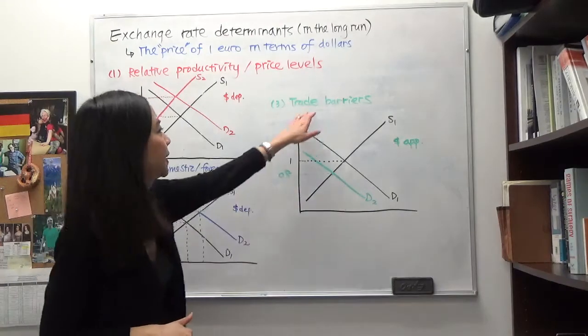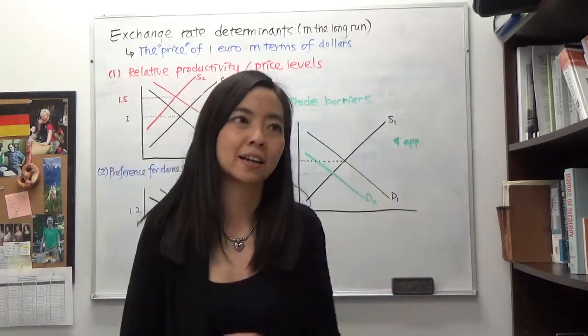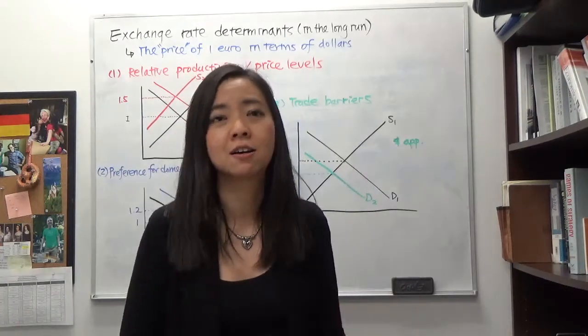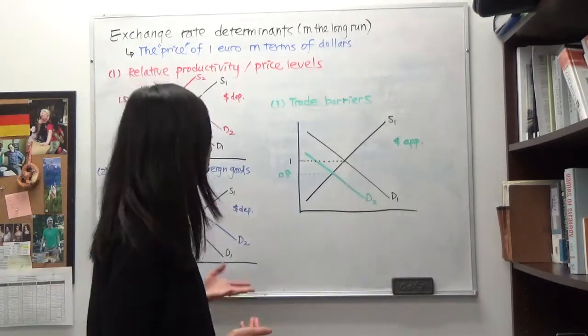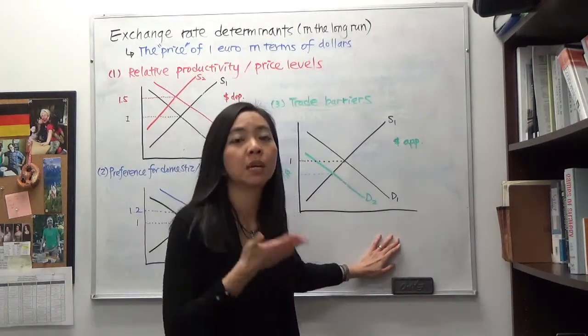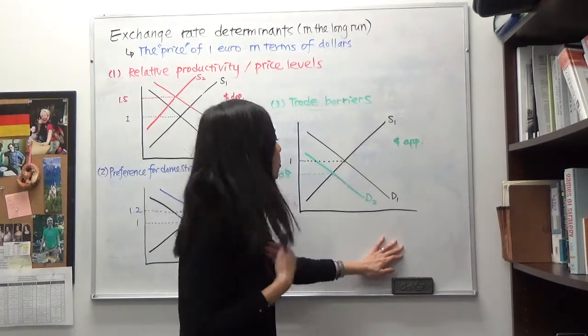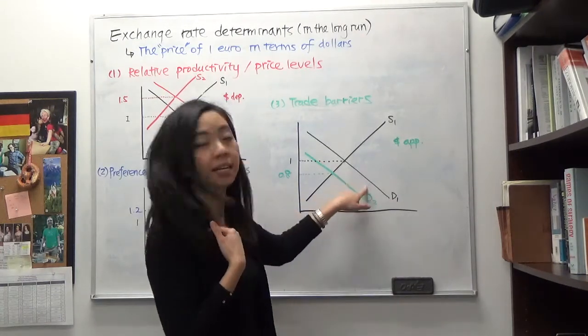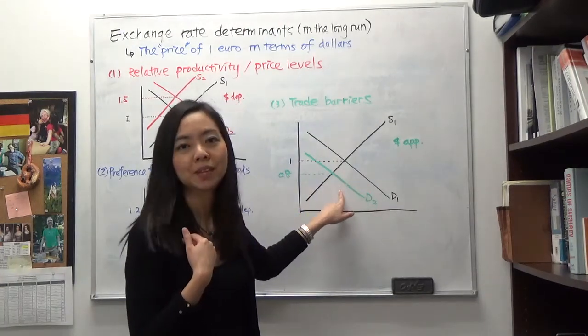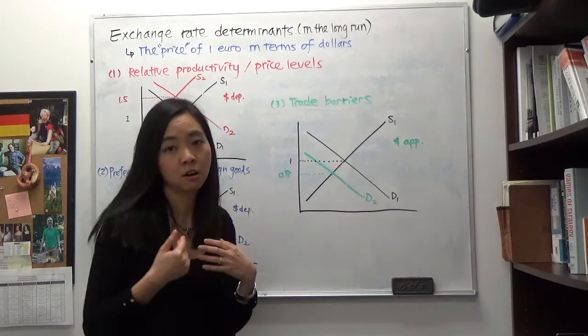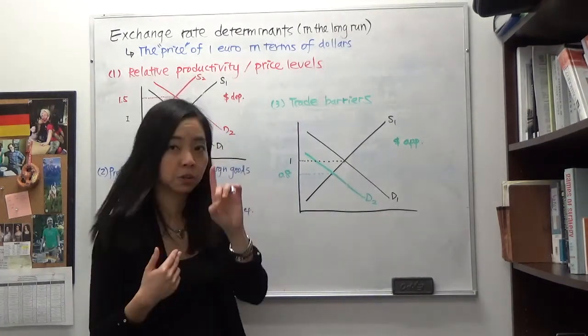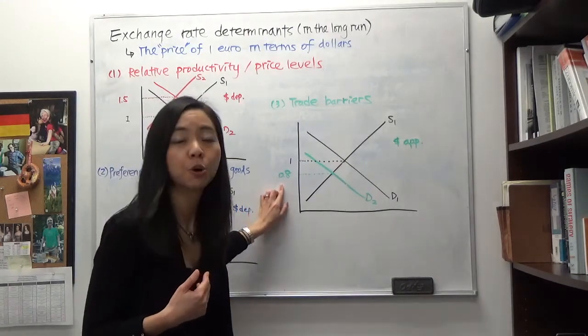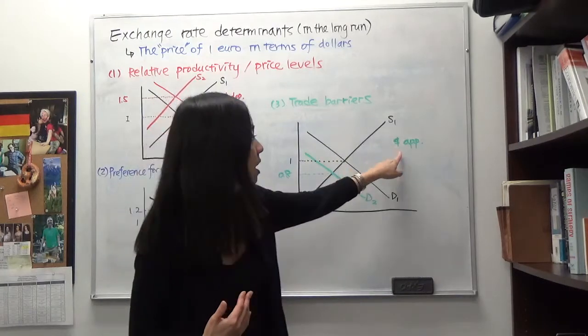And lastly, trade barriers. So suppose the US government wanted to protect say our local wine producers or our local beer producers. So the government imposed a tariff on European wine and European beer. So in that case, for Americans, European wine and beer will become relatively expensive and less attractive for us. And therefore, we don't want to buy wine or beer from them. We want to consume our local wine and local beer. Therefore, the demand for euro is going to decrease and shifting from D1 to D2. And in the equilibrium, you will see that now it costs fewer dollars to buy one euro. So the price of one euro is not one dollar anymore. The price of one euro is now only 80 cents. And therefore, you can see that the value of the dollar has increased. So we say the dollar has appreciated.